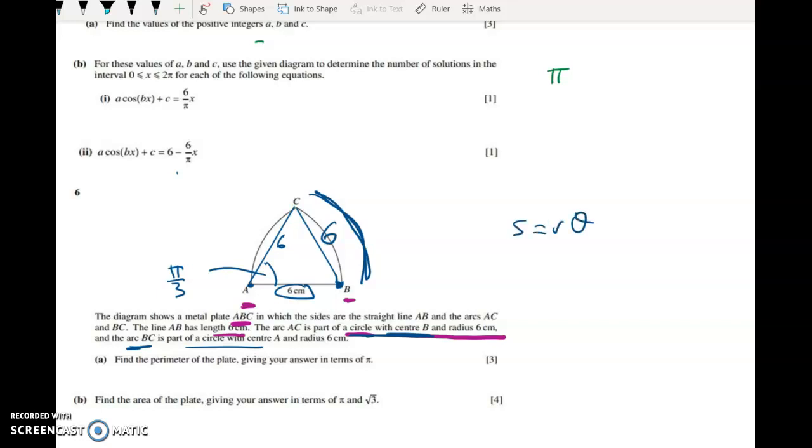Formulas we're going to need: S equals R theta. So the perimeter is AB plus arc BC plus arc AC. AB is six, and then I've got R theta, so six times pi on three, and then six times pi on three again, which gives me six plus four pi. So that's nice. That's for the perimeter.